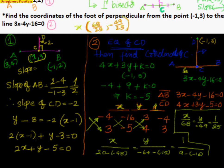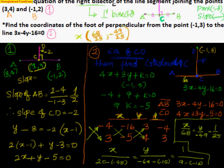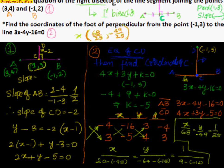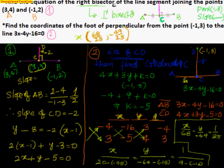Once you have the slope and the point, you can use the point-slope form. The point is (1, 3) and the slope is -2, so: y - 3 = -2(x - 1). Rearranging: 2(x - 1) + (y - 3) = 0, which gives 2x + y - 5 = 0. The perpendicular bisector passes through the midpoint of the given line segment and is perpendicular to it. Find the slope of the line, find the perpendicular slope, and you're done.